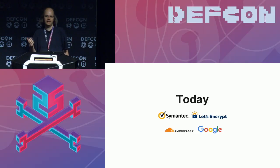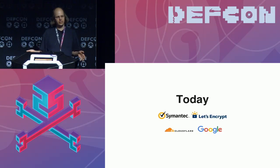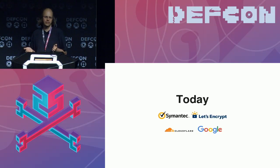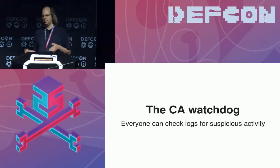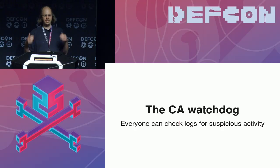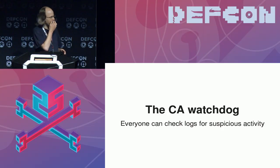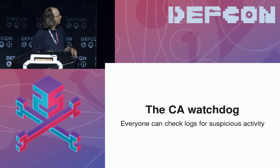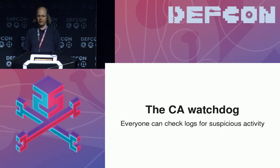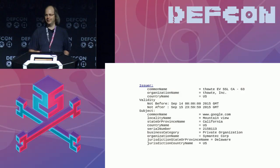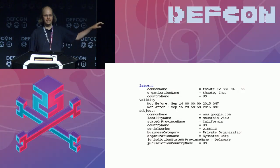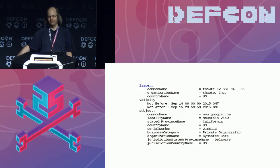You can think of certificate transparency a bit like a CA watchdog. Everyone can look into these logs and see if there's anything suspicious. The most obvious thing is to check if there are certificates for your own domains that you haven't ordered yourself — if there's a certificate for your domain that you don't know about, something is wrong. For example, there was a certificate that was only valid for one day and was for google.com — that turned out to be an internal test at Symantec that was somehow submitted to the public log, and Google found out. That started the whole Symantec controversy.